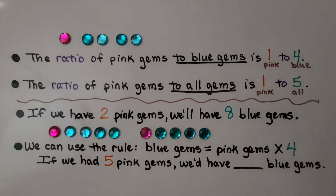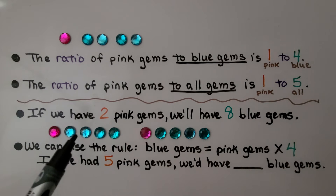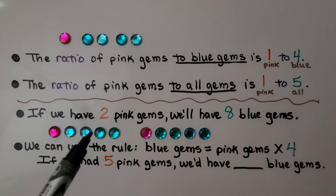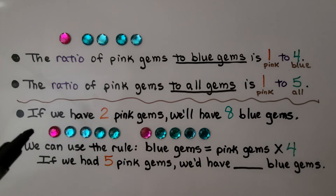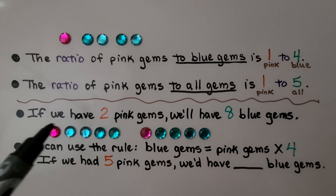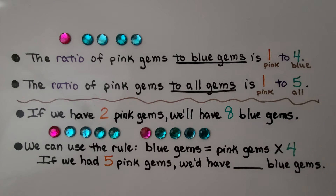If we have two pink gems — one here and one here — we'll have eight blue gems. For every pink gem, we have four blue ones. So if we have two pink ones, we'll have eight blue ones. We use the rule: blue gems equals pink gems times four.